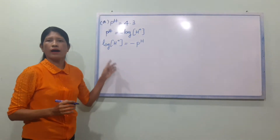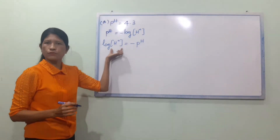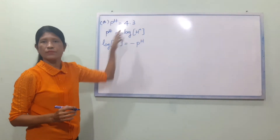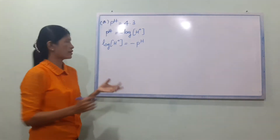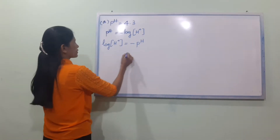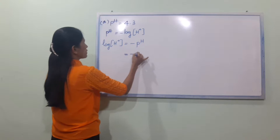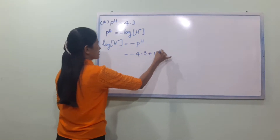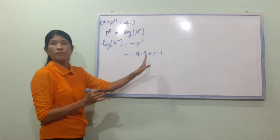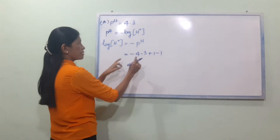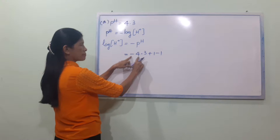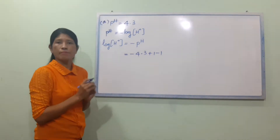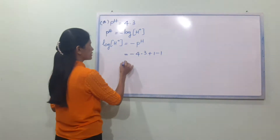So, if you have the hydrogen ion concentration, let's put pH equal to 4.3. The number is 4.3.